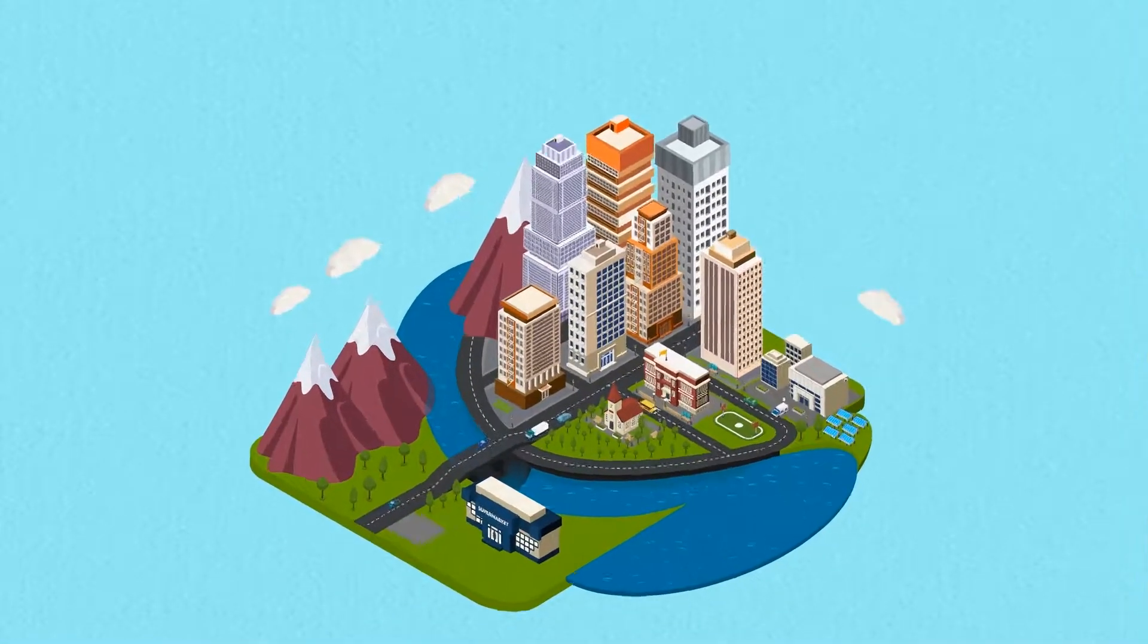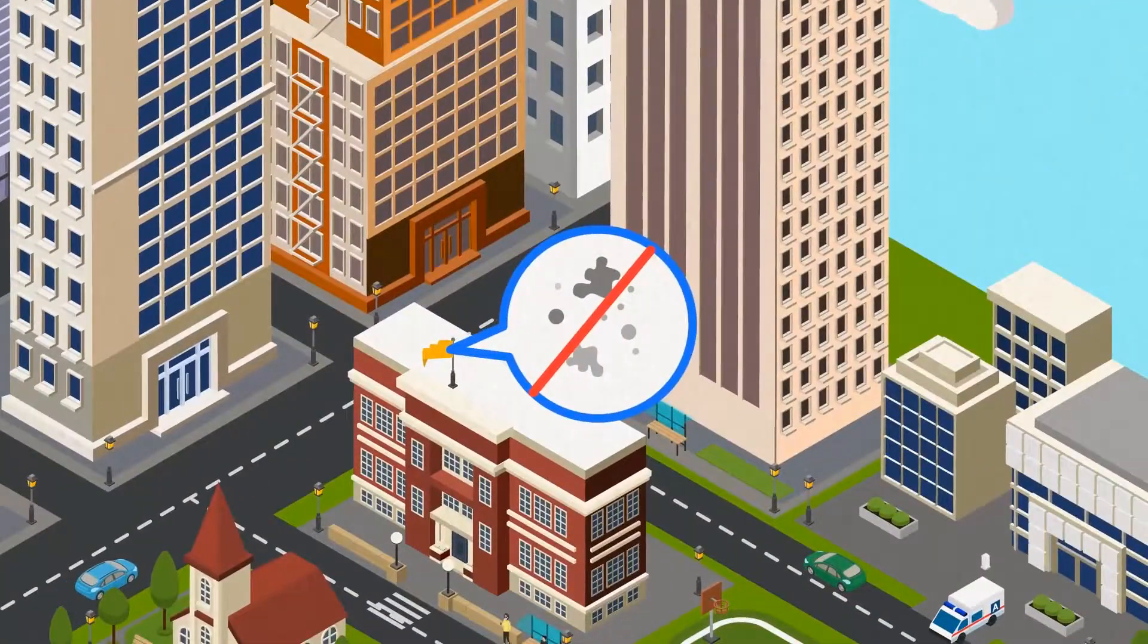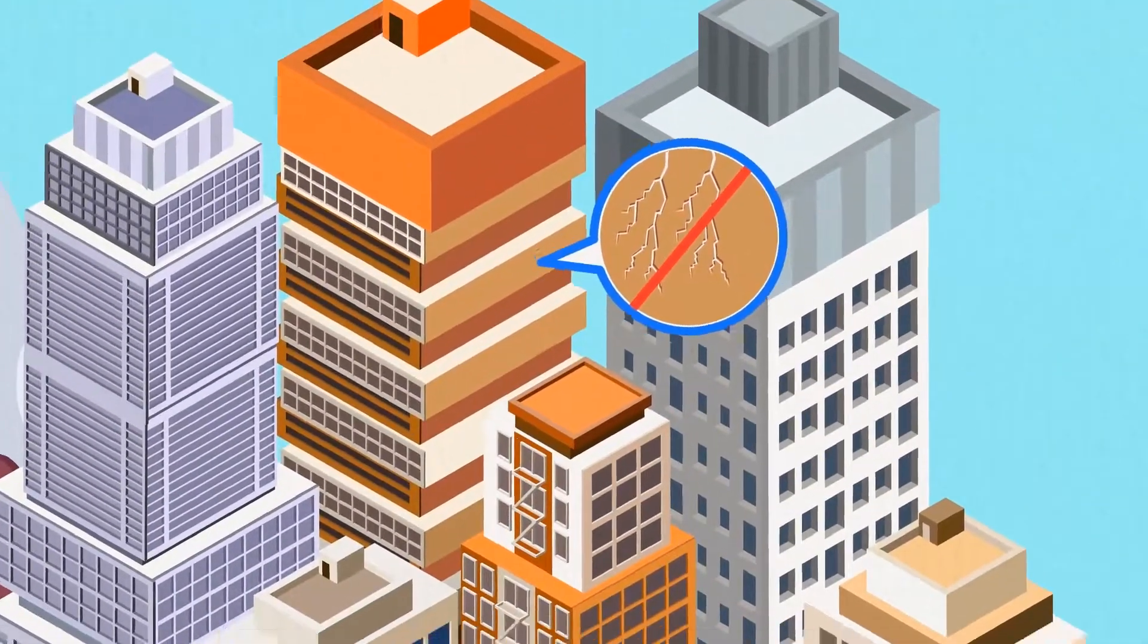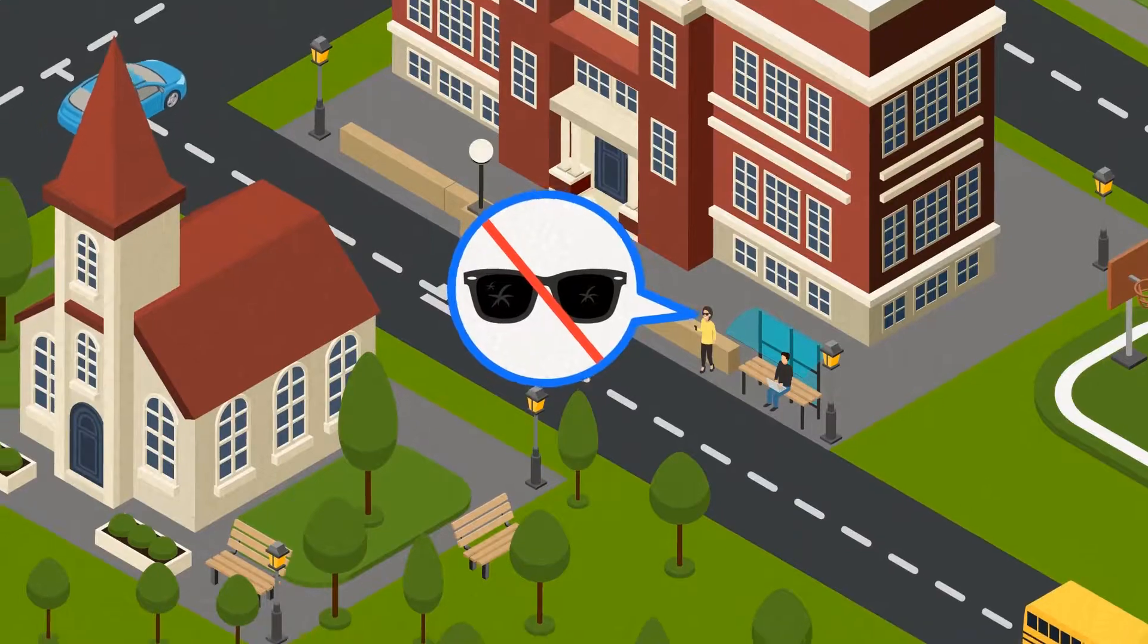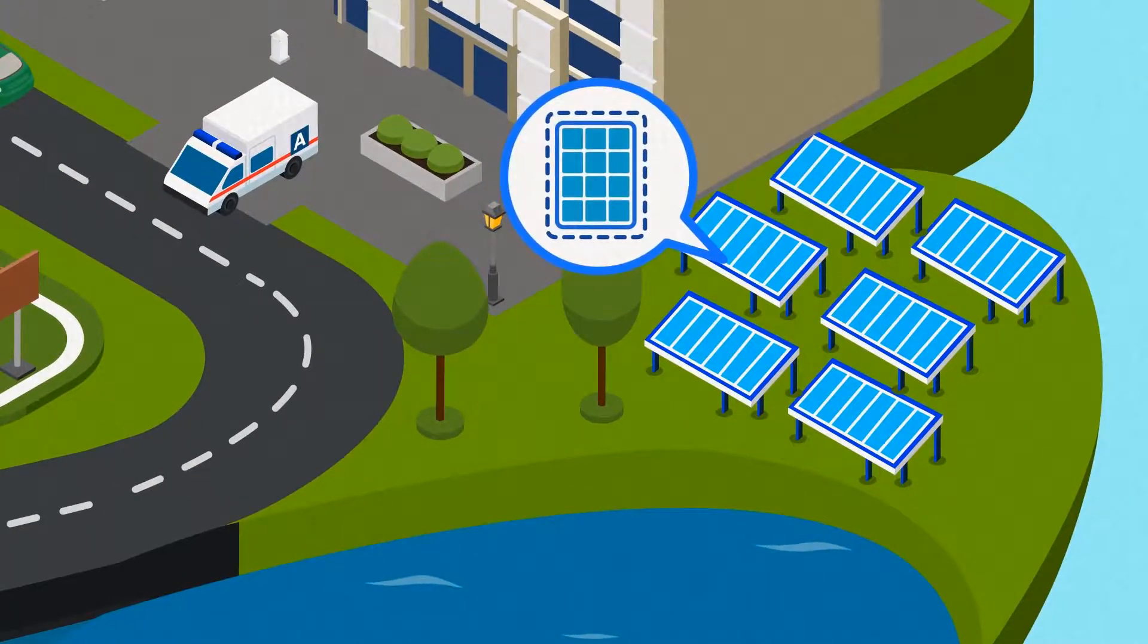Nanomaterials are all around us. Self-cleaning windows, stain-repellent fabrics, crack-resistant paints, scratch-proof eyeglasses, transparent sunscreens and ceramic coatings for solar cells.